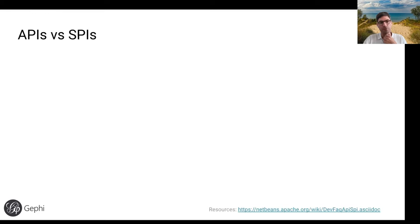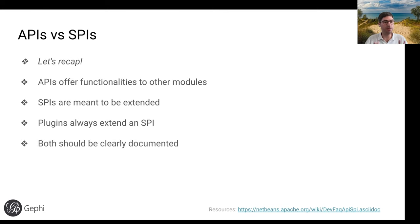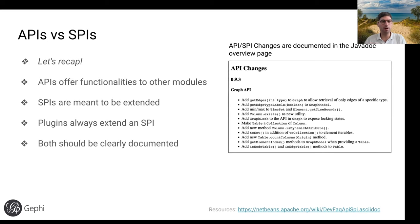So to recap: APIs offer functionality to other modules. SPIs are the ones meant to be extended. Plugins always extend an SPI. Both should be clearly documented, and we keep track of API/SPI changes in the main overview page of our Javadoc. If we make changes, you get the changelog of the API so you know what has changed — what are the new methods, and so on.